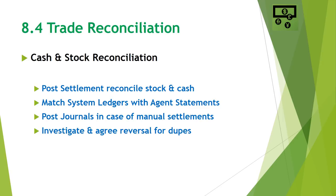Reconciliation teams need to investigate breaks in the reconciliation system, and if they find any duplicate settlements they may need to agree reversals with the counterparty. For example, if a trade split was agreed with the counterparty but by the time SWIFTs reached the agent, the original trade had already settled, this could result in shares being delivered twice to the same counterparty. This will appear as a break in reconciliation, and the reconciliation teams will agree a reversal with the counterparty whose systems will show the same breaks.